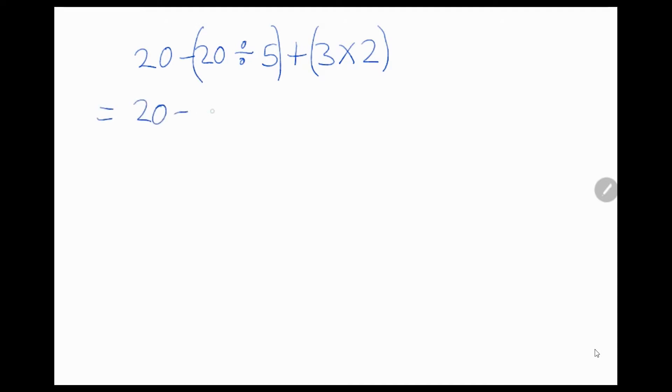This becomes 20, so 20 divided by 5 is equal to 4, so 20 minus 4. And 3 times 2 is equal to 6. So 20 minus 4 plus 6, that will give us a final answer of 22.